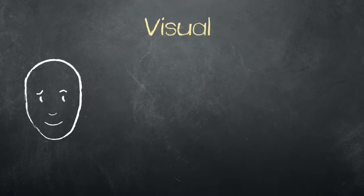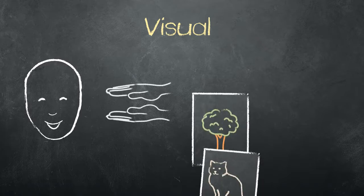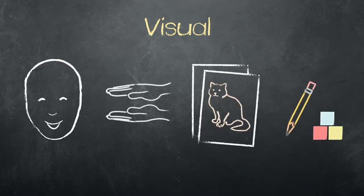Some examples of visual cues and clues are facial expressions, hand gestures, pictures, or objects.